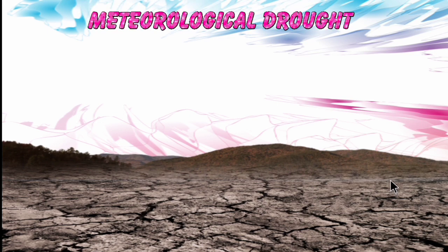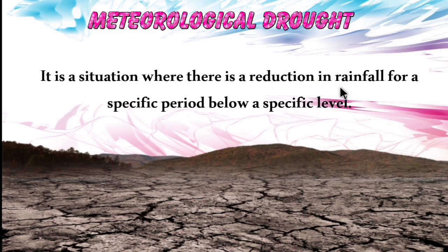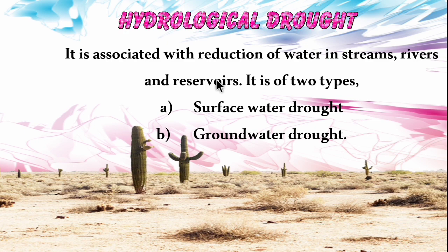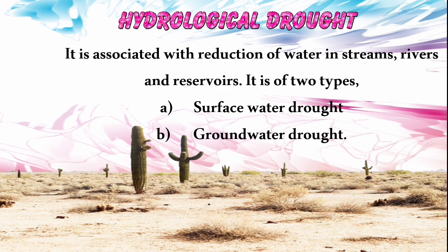Hydrological drought is associated with reduction of water in streams, rivers and reservoirs, and is of two types: surface water drought and groundwater drought. Surface water drought refers to reduced water in rivers and lakes, while groundwater drought refers to reduction of water below the earth's surface.